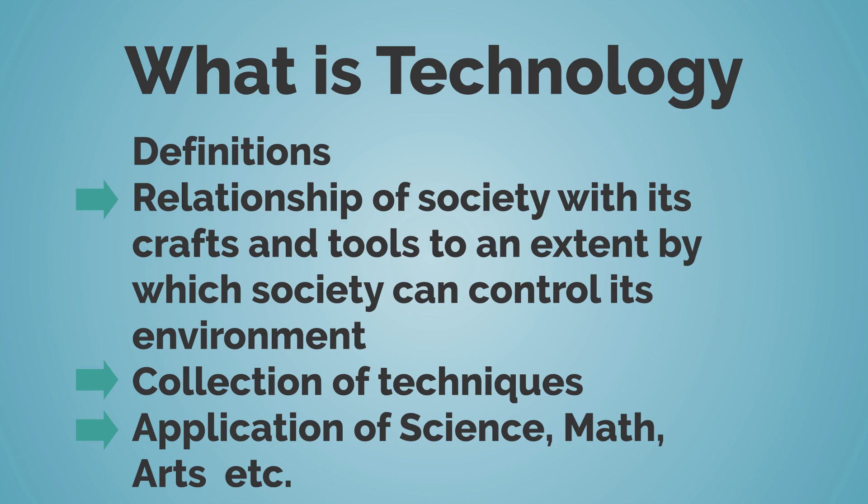What is technology? It is the relationship of society with its crafts and tools, to the extent by which society can control its environment. So through our mobile phones and our internet, these are our tools through which we control our environment. Technology is the process by which humans modify nature to meet their needs and wants. It is a collection of techniques and the application of science, maths, arts, etc.